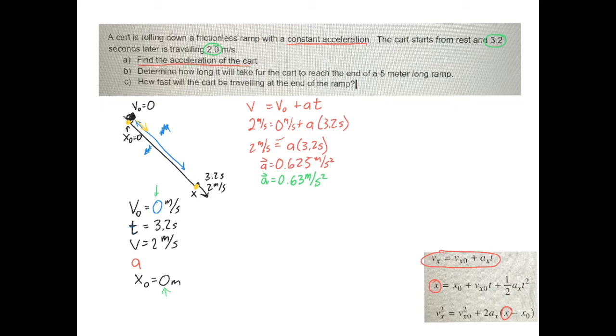Okay, letter B says, determine how long it will take for the cart to reach the end of a 5 meter long ramp. So what that means is they're giving me another piece of information here. They're telling me that the final position is 5 meters. Now, some of this may actually change now. This may mean that it's not going 3.2 seconds anymore. In fact, because I'm solving for time, I'm going to guess that it's not going to be 3.2 seconds anymore, which means my final velocity is not 2 meters per second anymore.